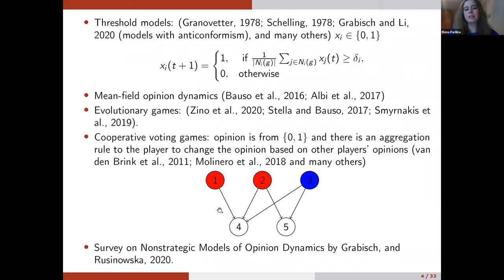I demonstrate one example of a structured society with leaders and followers in the network. For instance, agents one, two, and three are leaders, and there are two followers. Agent four is influenced by the opinions of these three leader agents. If agents one and two have opinion one and agent three has opinion zero, then this follower agent is assumed to change opinion to one because two-thirds of the leaders have that opinion.